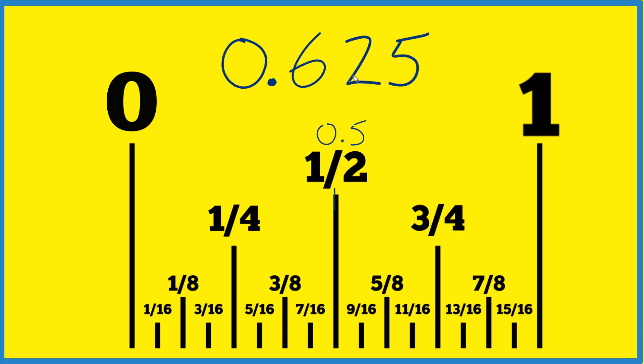We know that 0.625 is larger than 0.5, so it needs to be on this half over here. Three-fourths right here is 0.75, so 0.625 is less than 0.75. Somewhere in here is 0.625. Turns out it's right down the middle here. It's five-eighths.